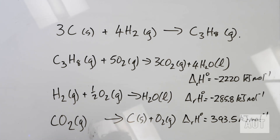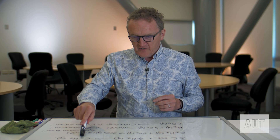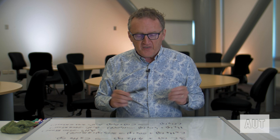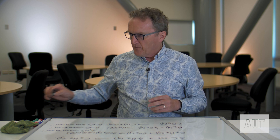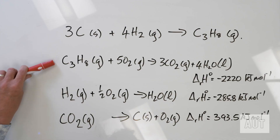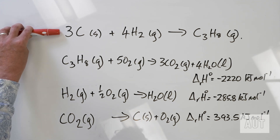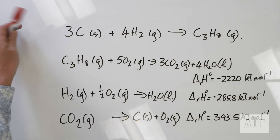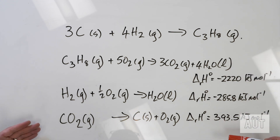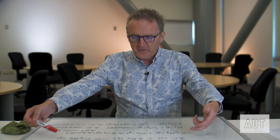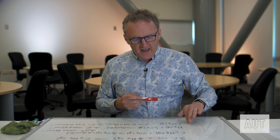So how do we figure out delta H for our target equation from these three given equations? We're going to have to manipulate these equations in some way so that equations one, two, and three add up to give us the target equation. This is a very common type of problem in exams, whereby you're given a series of equations that you have to manipulate so they add up to give you the equation you want.